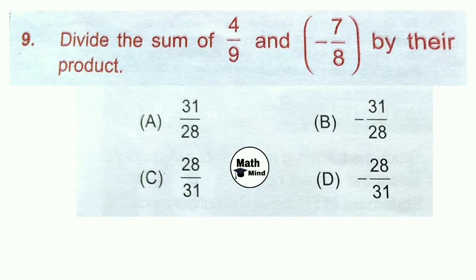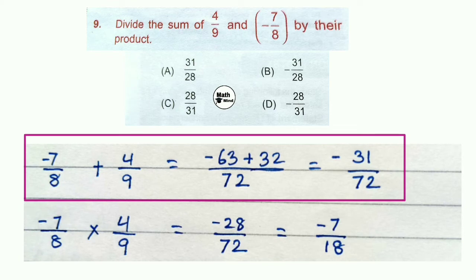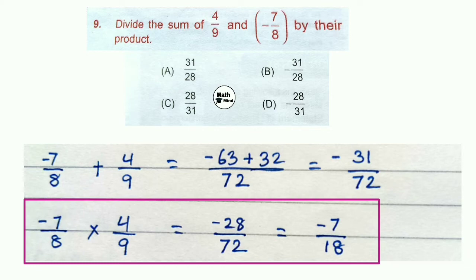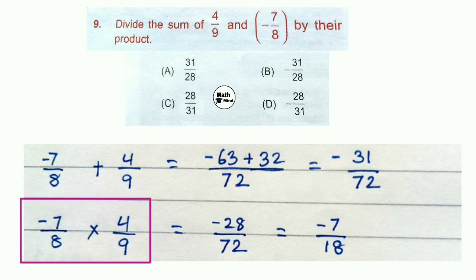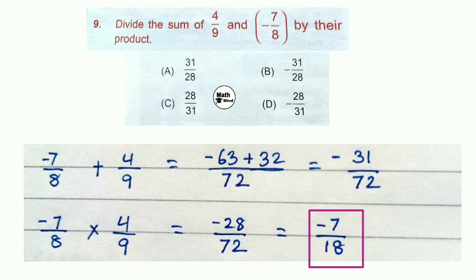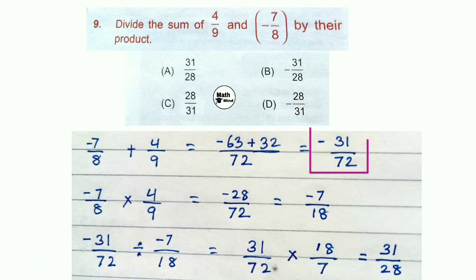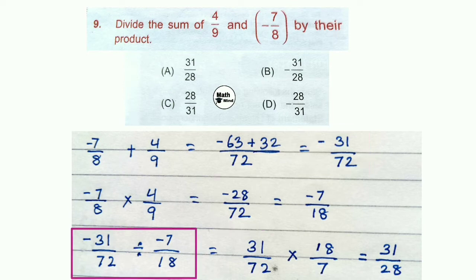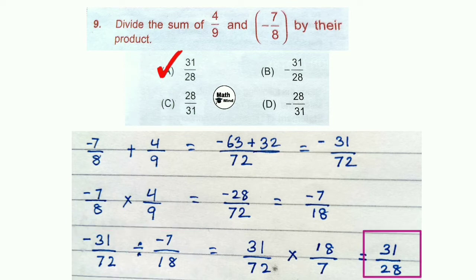Question 9: Divide the sum of 4/9 and −7/8 by their product. Sum = −31/72. Product: one number is negative and one positive, so product = −28/72 (negative). Dividing: (−31/72) ÷ (−28/72) — both negative, so quotient is positive = 31/28. Option A is correct.